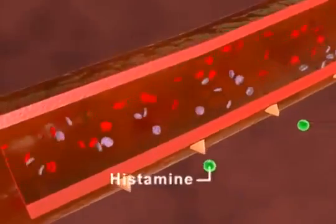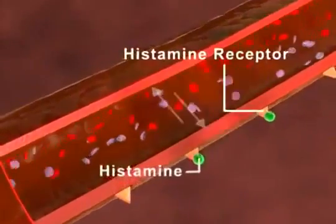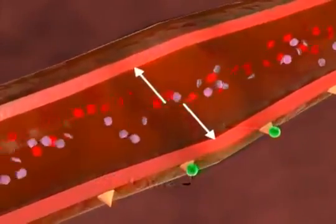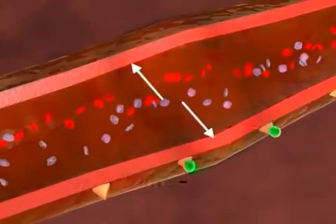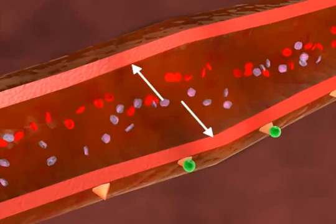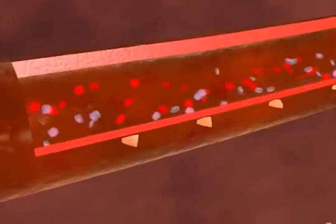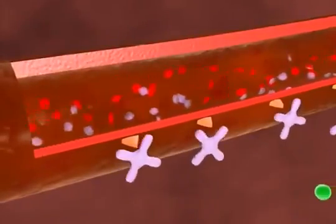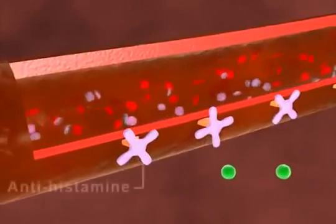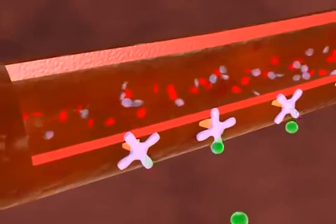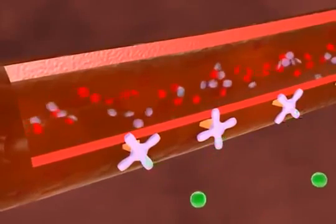These mediators cause dilation of the surrounding blood vessels and increase their permeability. This results in the nasal stuffiness, sneezing, and mucous discharge of allergic rhinitis. Antihistamines work by blocking the action of histamines at its receptors, and thus decreasing the body's reaction to the allergen.